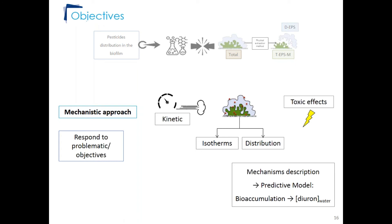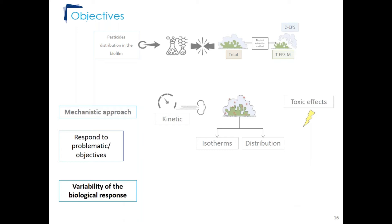This mechanistic description allows establishment of a predictive model to calculate the diuron concentration in the water from bioaccumulation values. Finally, the variability of the biological response was studied as a function of different environmental factors; today, only the influence of flow velocity will be presented.